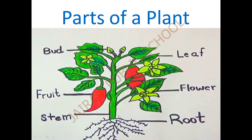Next is the root. R-O-O-T, root. Root is the innermost portion - it cannot be seen outside because it is inside the soil. Without the root the plant will not be alive. If the root is dead, the plant is also fully dead. So the most important part is the root. With the help of the root, when we pour water, it will absorb the water. It is under the soil, called as the root system.